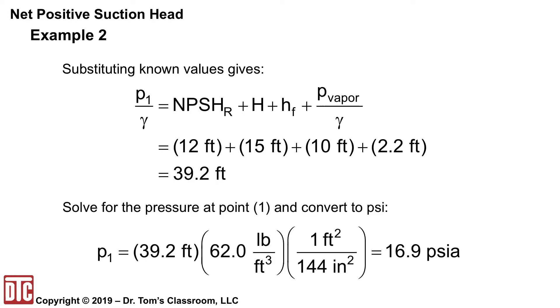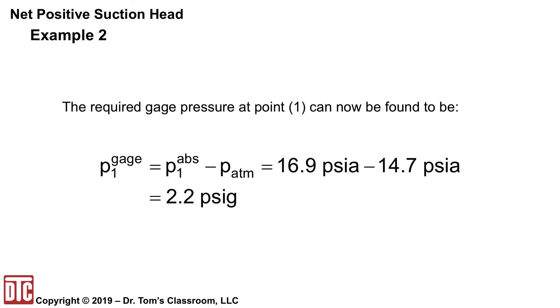We'll now multiply through by the gamma, which in this case is 62.0. Convert units there to get PSIA. So what we need is 16.9 PSIA, A for absolute. And if we subtract off atmospheric 14.7, then what we need to do is pressurize the closed top tank to 2.2 PSIG. And that will give enough energy to the fluid in order to make sure that it doesn't cavitate as it enters the pump.